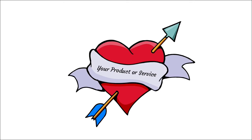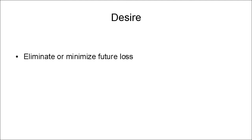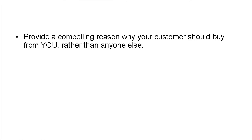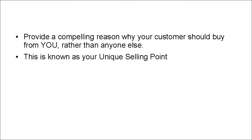This leads naturally into forming the desire for the product. Once they have an idea of what's in it for them, they're going to start to desire your product or service. There are several types of desires you can stimulate in your copy — you can stimulate the desire to eliminate or minimize a future loss, or to gain something. You should provide a compelling reason why the customer should buy from you rather than anybody else, known as your unique selling point, or USP.